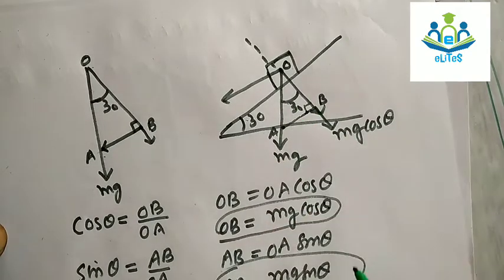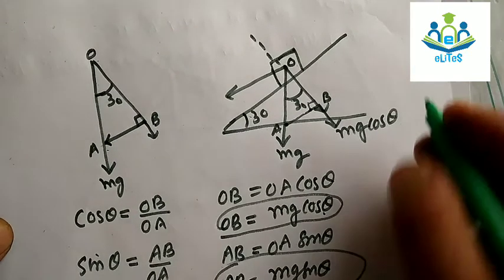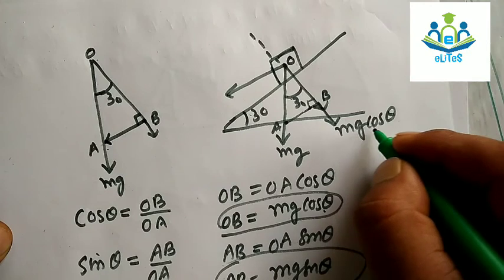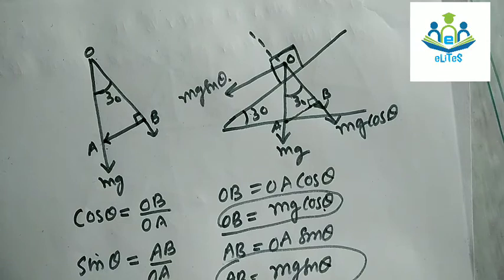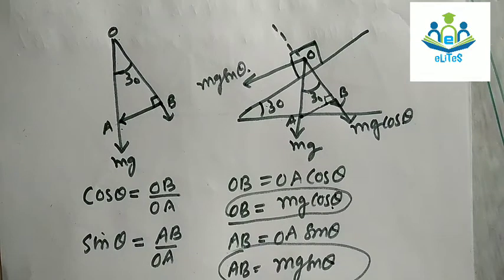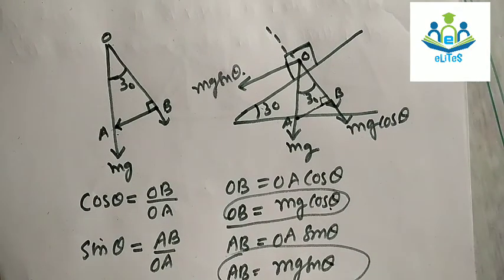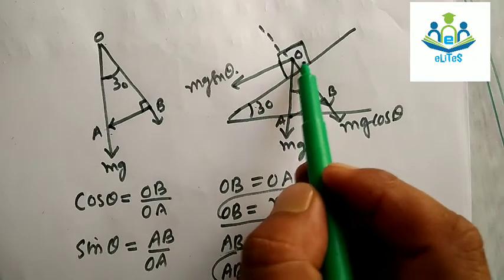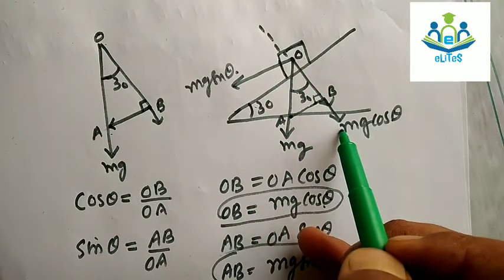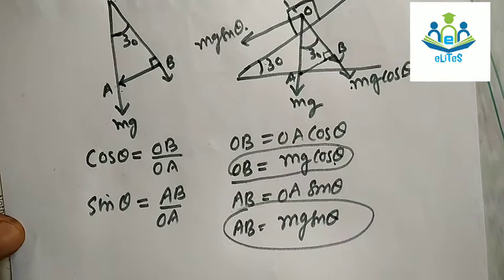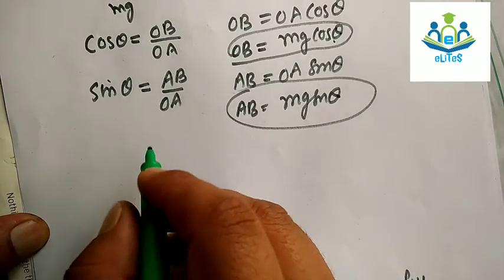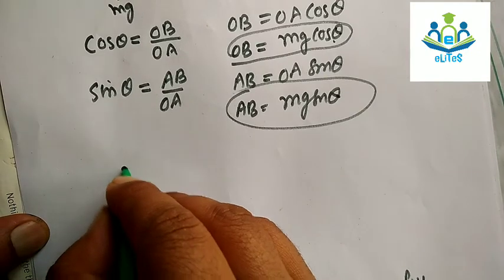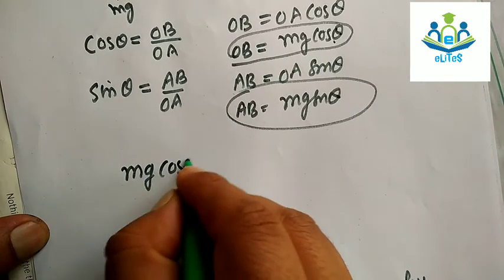Since the angle is 30 degrees, we have Mg cos theta as one component and Mg sin theta as the other. We need the component perpendicular to the plane. That component is Mg cos theta.